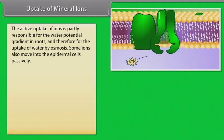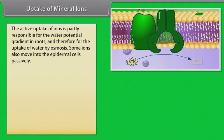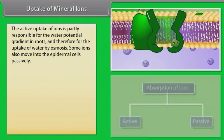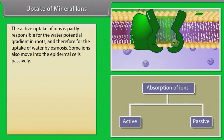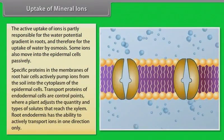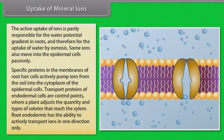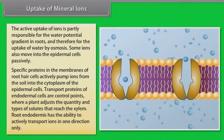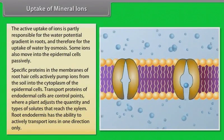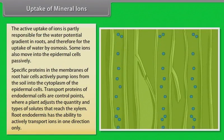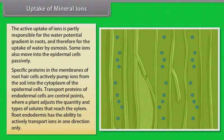The active uptake of ions is partly responsible for the water potential gradient in roots and therefore for the uptake of water by osmosis. Some ions also move into the epidermal cells passively. Ions are absorbed from the soil by both passive and active transport. Specific proteins in the membranes of root hair cells actively pump ions from the soil into the cytoplasm of the epidermal cells. The endodermal cells have many transport proteins embedded in their plasma membrane. They let some solutes cross the membrane but not others. Transport proteins of endodermal cells are control points where a plant adjusts the quantity and types of solutes that reach the xylem. The root endodermis, because of the layer of suberin, has the ability to actively transport ions in one direction only.